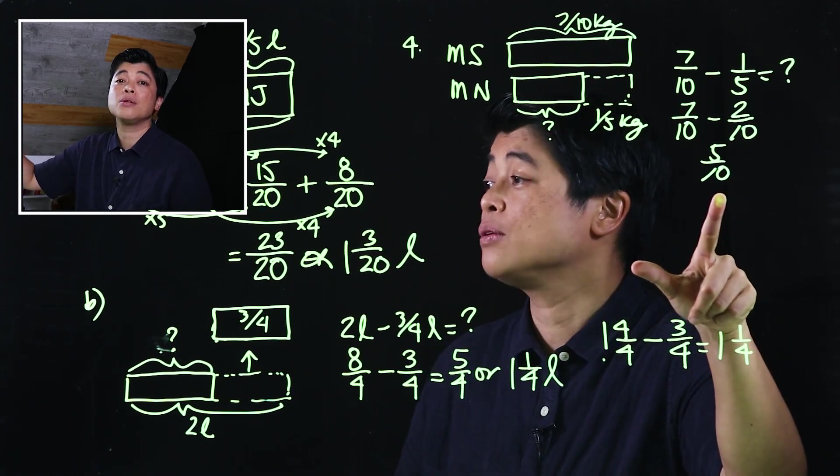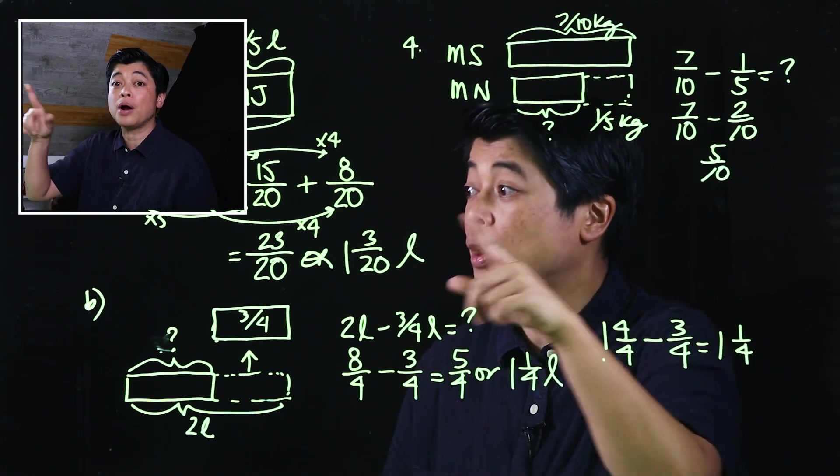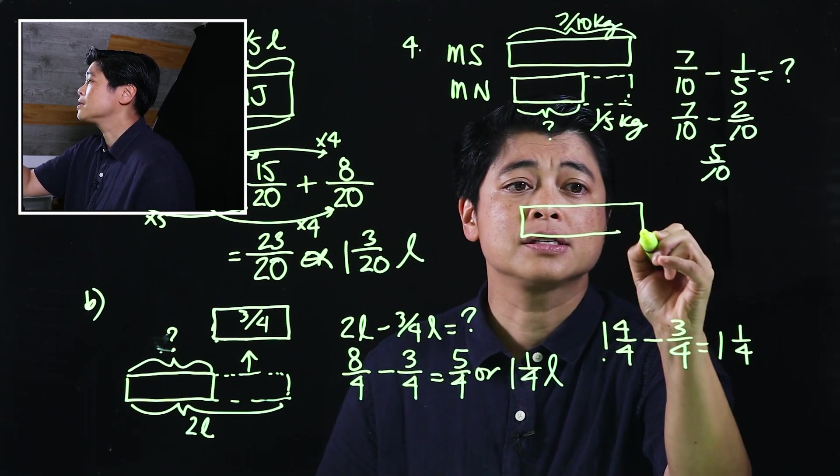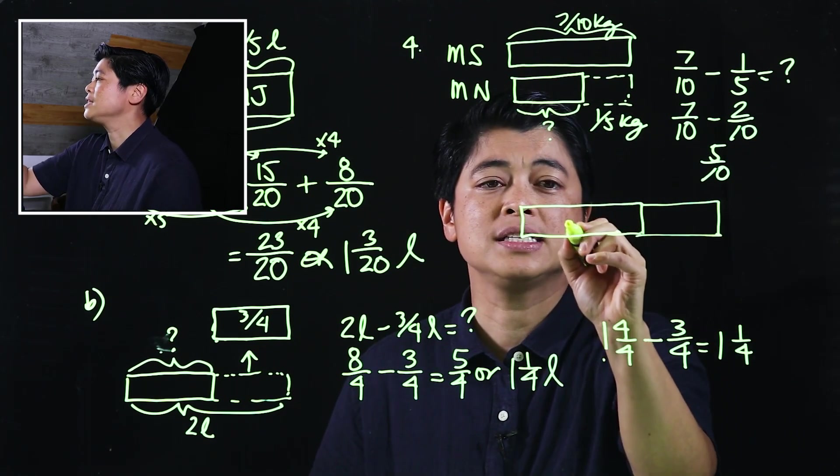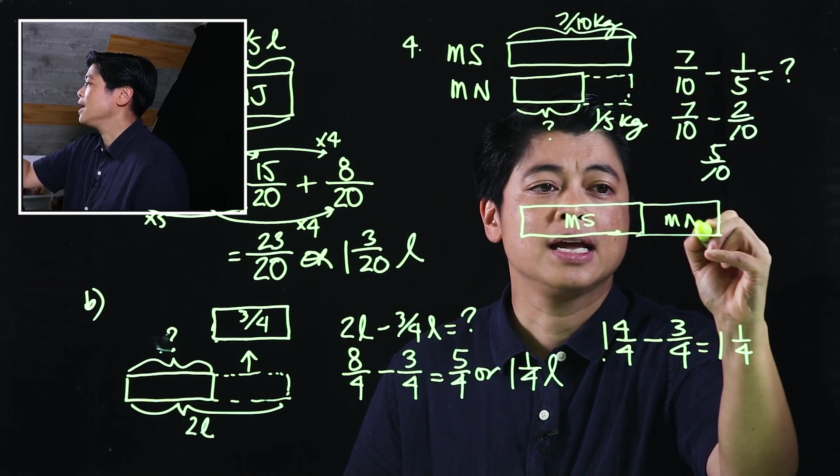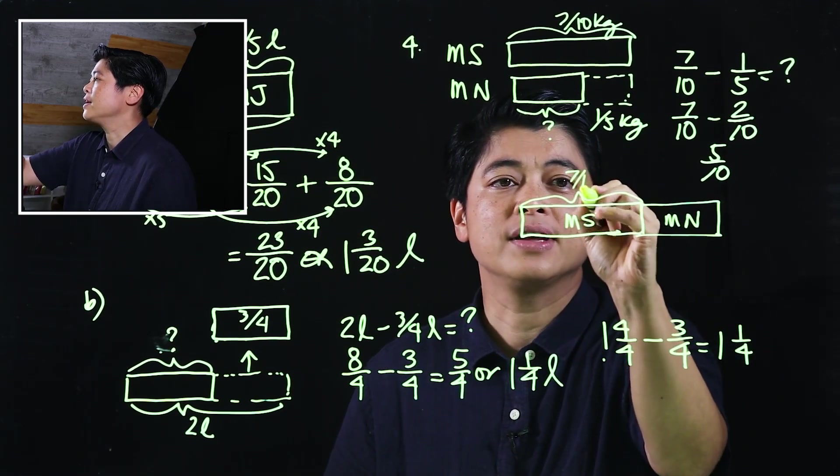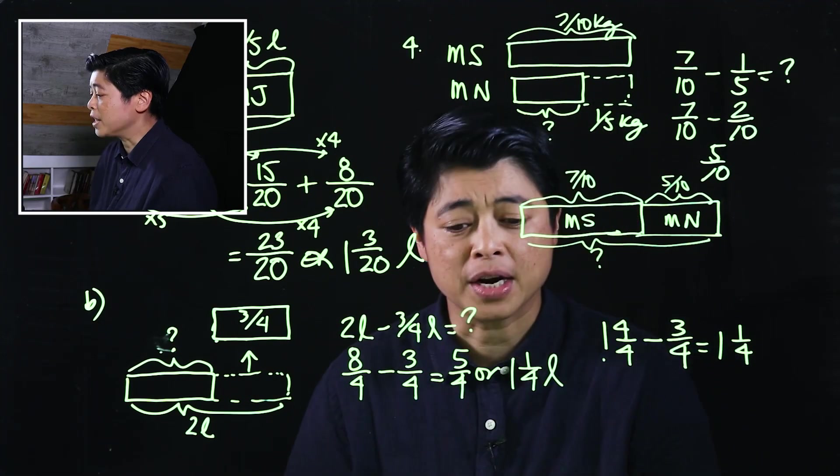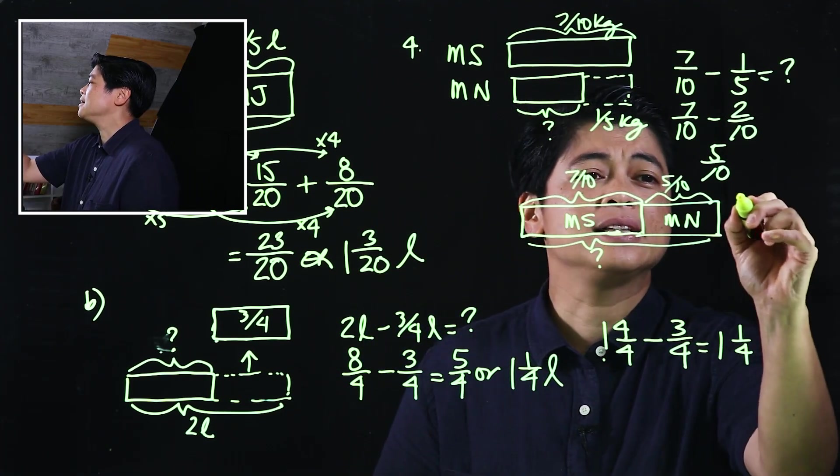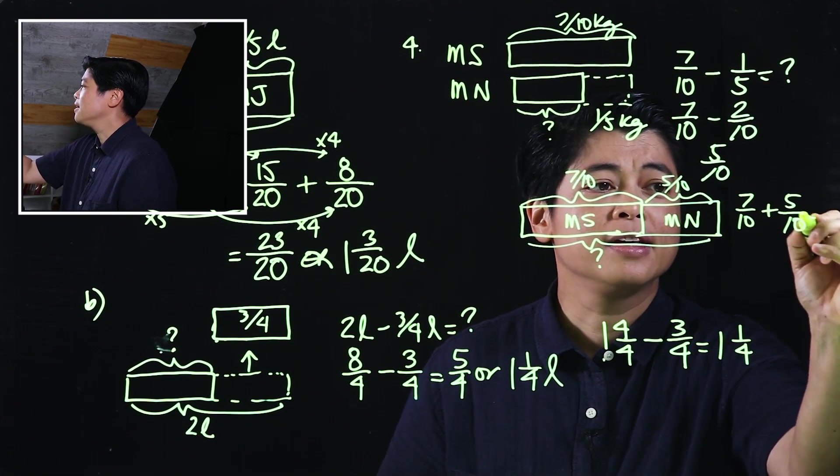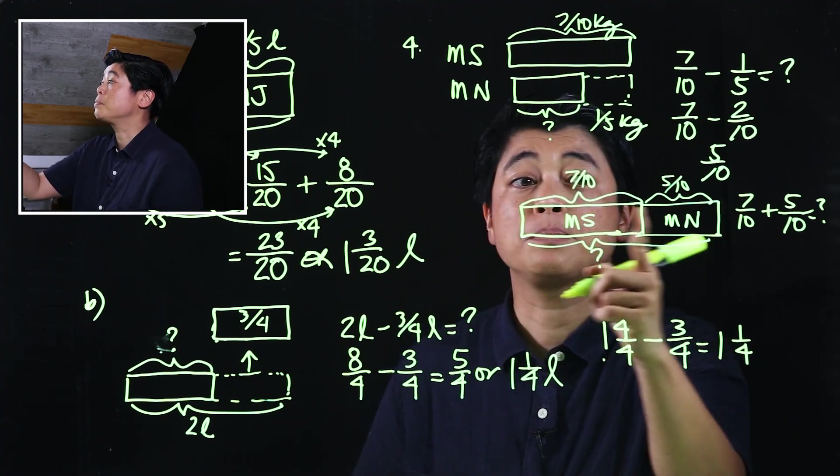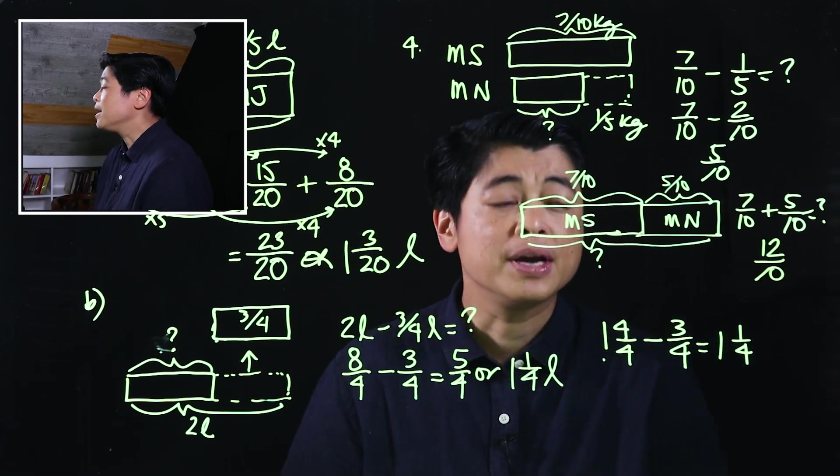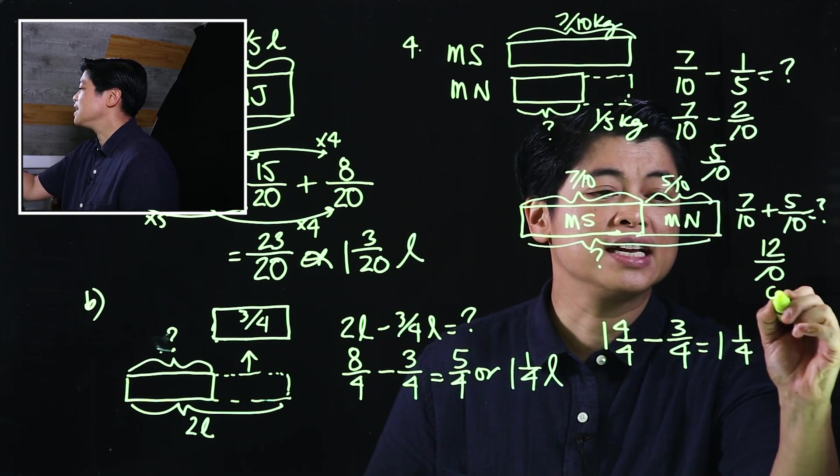So this is the second step. This is MS and MN. This is 7/10, this is 5/10, and this is question mark. Which means if I add 7/10 and 5/10, that will give me my question mark, because it's part-whole missing is the whole combined together. That will be 12 over 10, which reduces to 6 over 5, or 1 and 1/5.